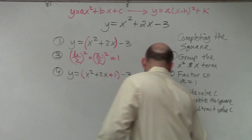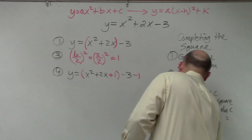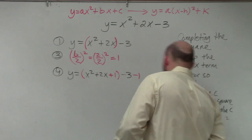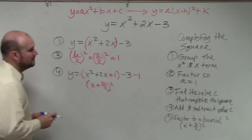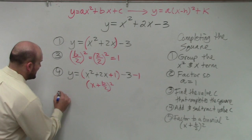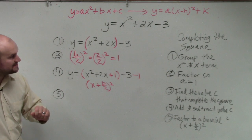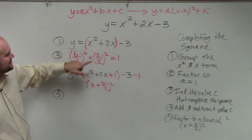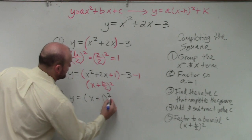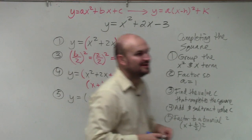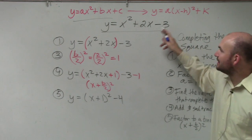Now in step number five, we're going to factor to a binomial squared. If you guys remember, that was (x + b/2)². So b divided by 2: 2 divided by 2 was 1. So I have y equals (x + 1)². Negative 3 minus 1 is negative 4. I now took an equation that was in standard form and rewrote it in vertex form.